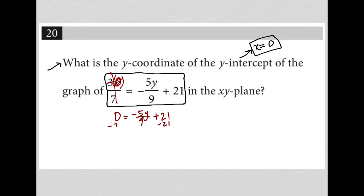I'd then subtract 21 from both sides of this equation, and I'd have negative 21 equals negative 5y over 9. I'd then multiply both sides by negative 9 fifths, and that way I'd have just y, because this would cancel out. I'd have just y over here on the right-hand side.